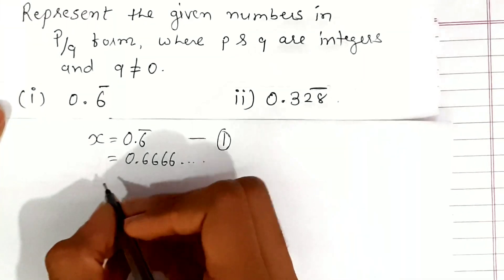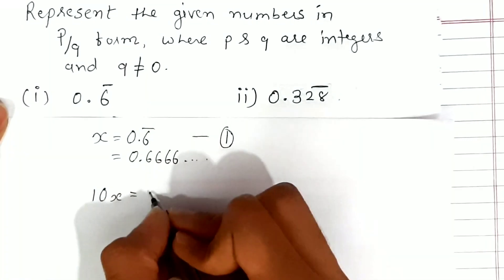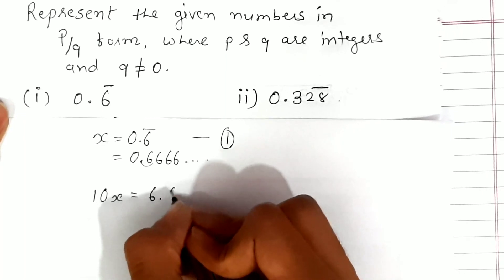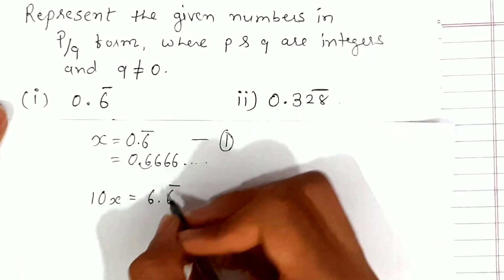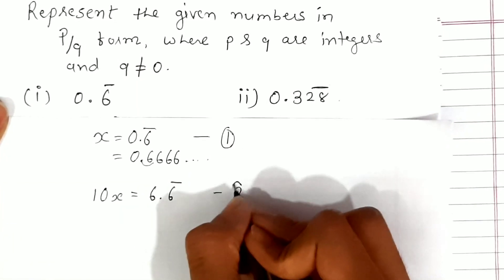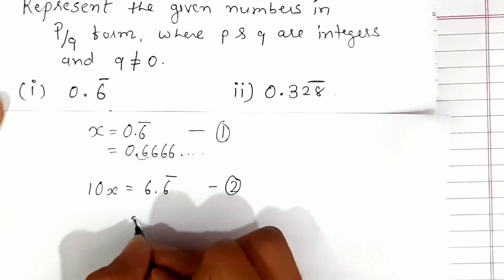Now for our second equation, we'll multiply both sides by 10, so we get 10x = 6.6̄. The decimal point will shift one place to the right. This is our equation 2.